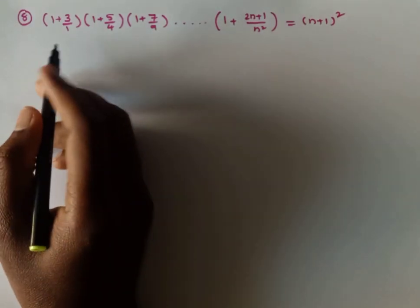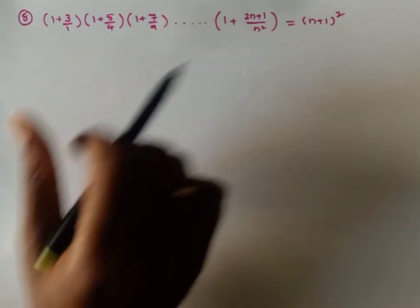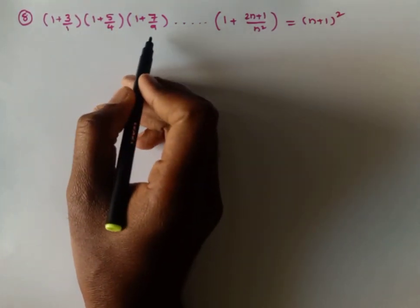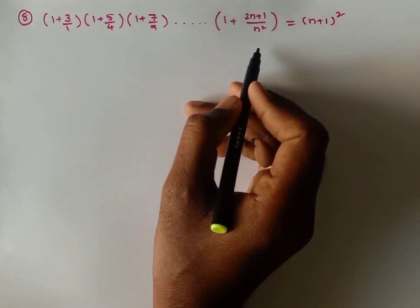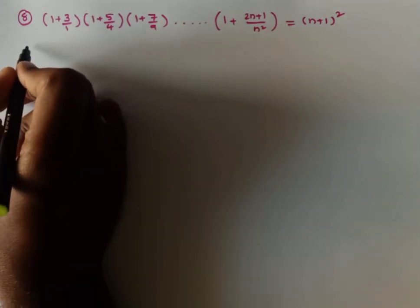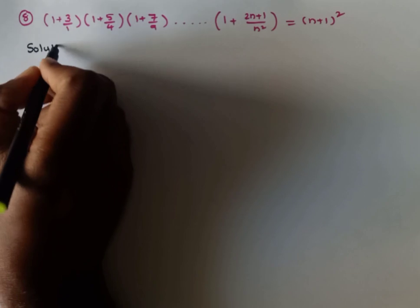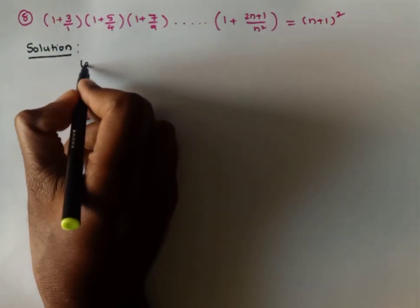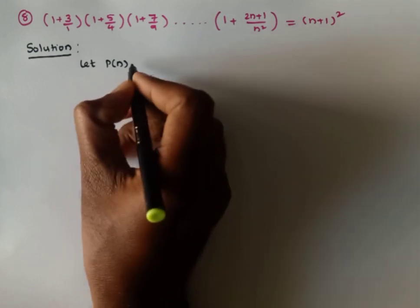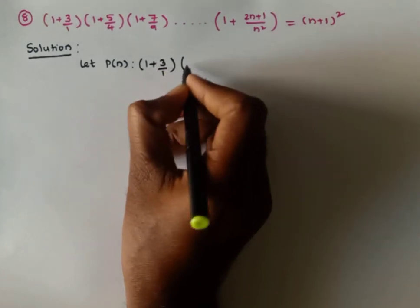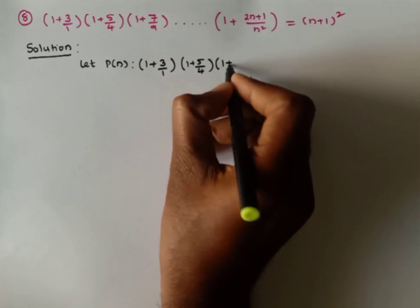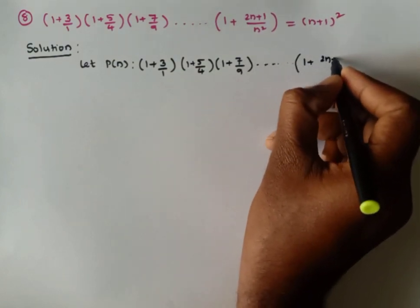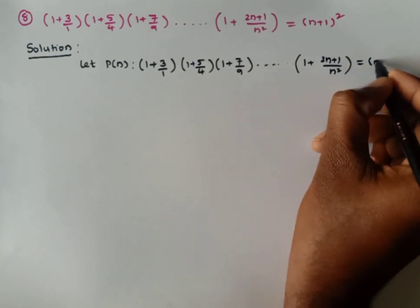Now the eighth problem from exercise 2a is something different. Here the product of n terms is: (1 + 3/1)(1 + 5/4)(1 + 7/9)... up to (1 + (2n+1)/n²) = (n+1)². We use mathematical induction to show the given statement. Let P(n) be: (1 + 3/1)(1 + 5/4)(1 + 7/9)...(1 + (2n+1)/n²) = (n+1)².